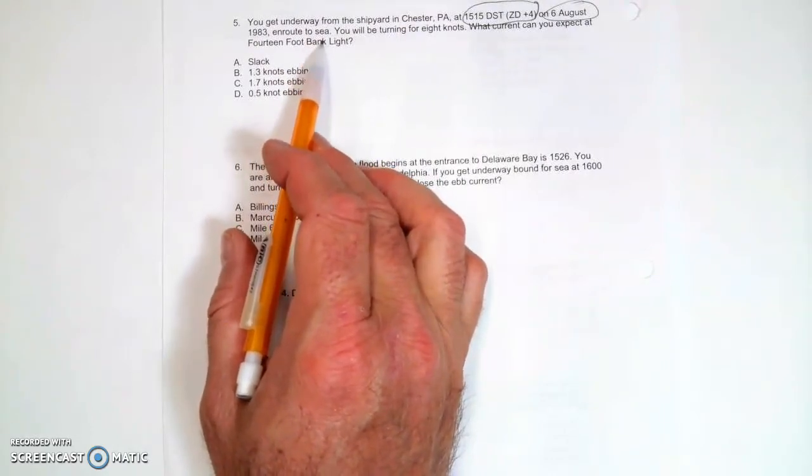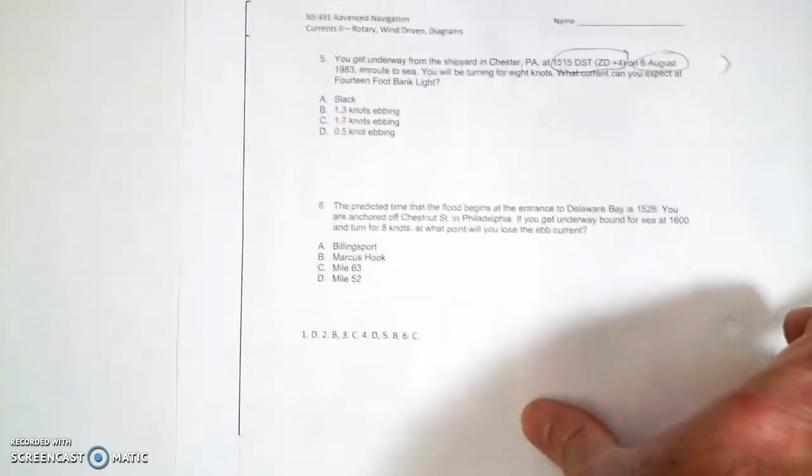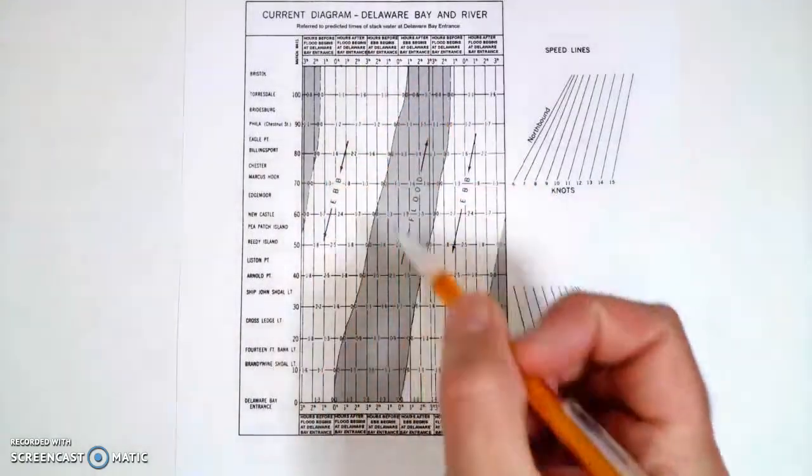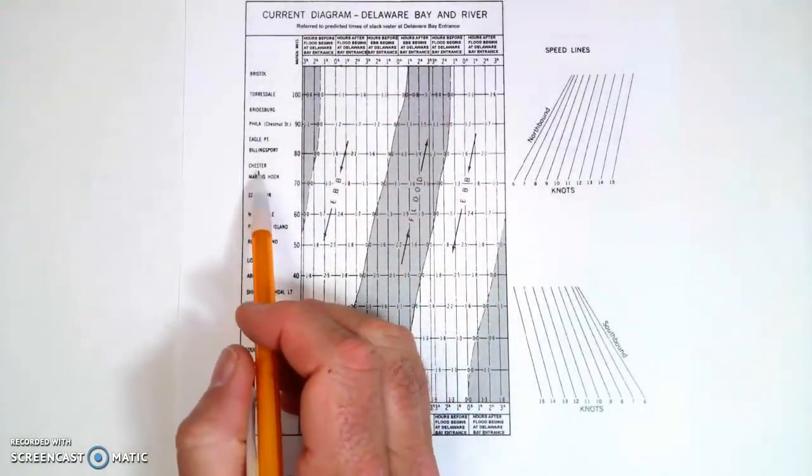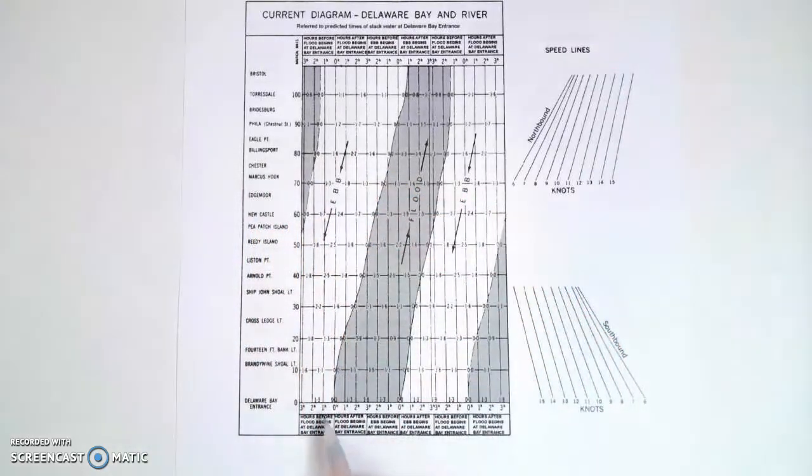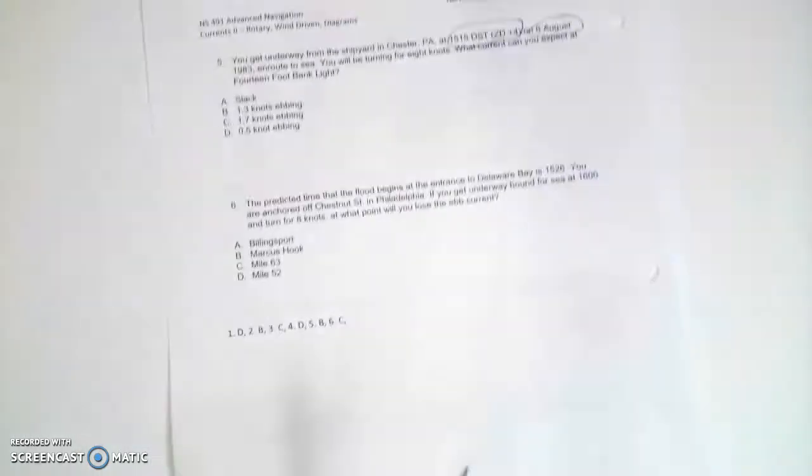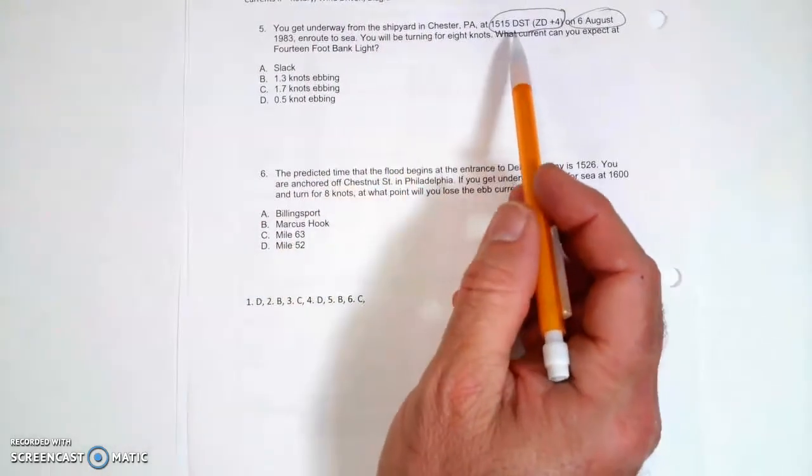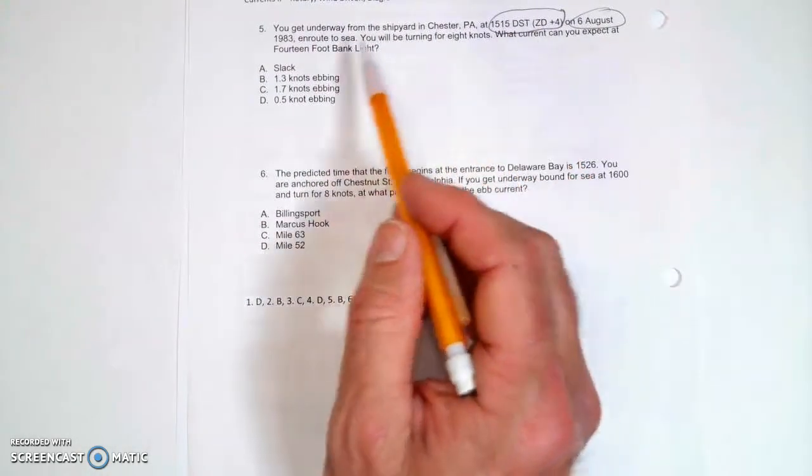That means we're going to be going southbound, headed towards the mouth of the Delaware Bay. Chester is around mile 77, and we're going to be headed down towards the entrance. We're going to leave around 1515 daylight savings time.